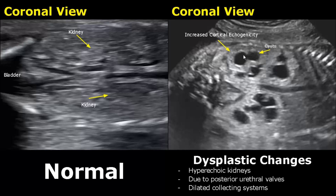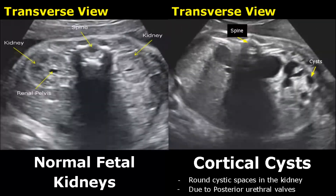The kidneys appear hyperechoic and have cystic areas. Here is another case of posterior urethral valves showing cortical cysts in the kidney, and you can also notice the hyperechoic appearance of the kidney.